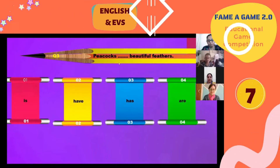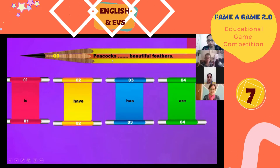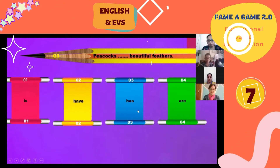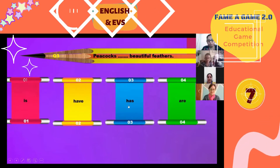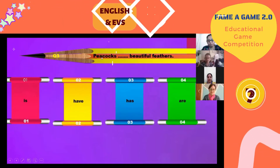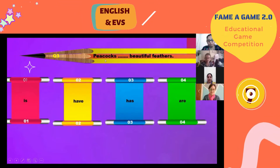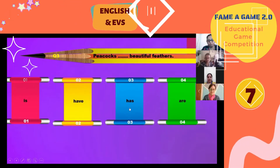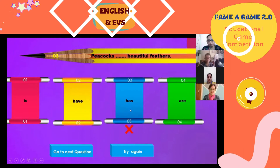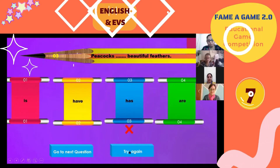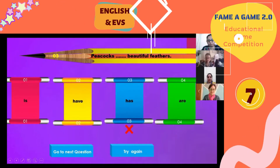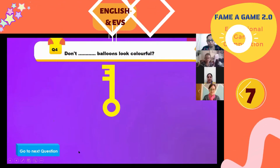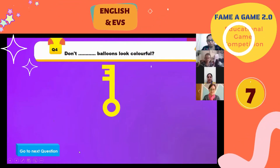Next question: 'Peacocks — beautiful feathers — has or have?' Since 'peacocks' is plural, the correct answer is 'have.' If the child clicks 'has' it would be wrong. Moving to the next question.